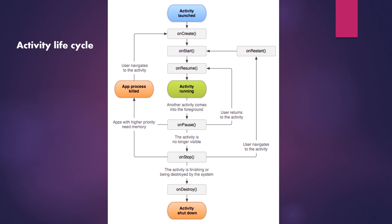The activity lifecycle is a phrase for demonstrating different situations that an activity can go through from creation to the destroying process. The first method executed in every activity is onCreate — we can initialize views or onClick listeners inside onCreate. After that, onStart is triggered, followed by onResume.